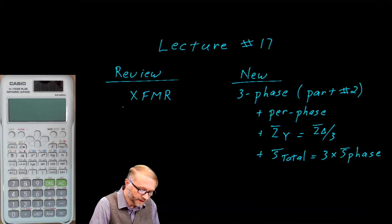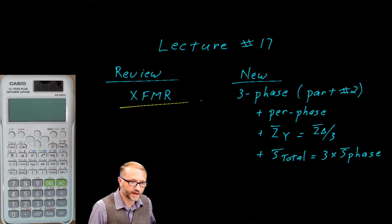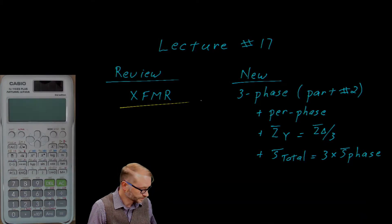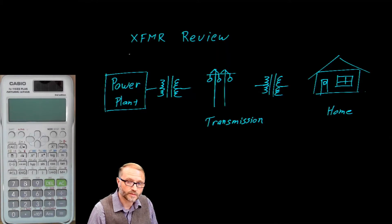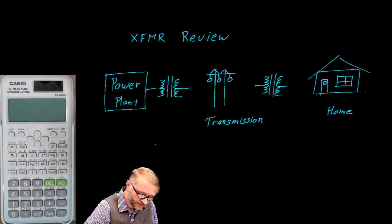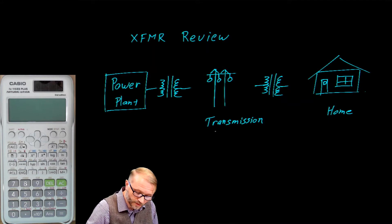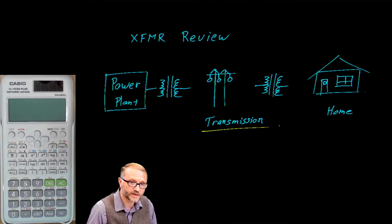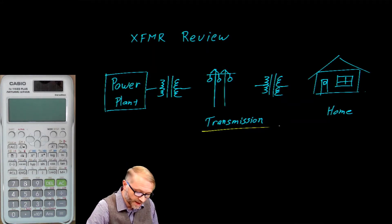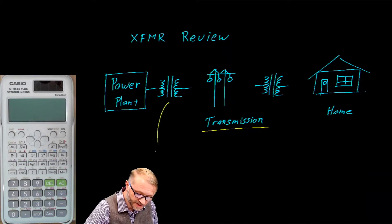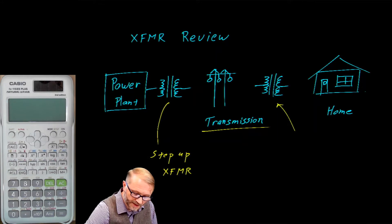Let's do a quick review of the transformer. This is a reminder about the purpose of the transformer. We want to get power from the power plant to your home — of course, there are many miles in between. Your home is connected to the power plant via transmission lines. For the most efficient delivery, we use a step-up transformer, and right next to your home we use a step-down transformer.